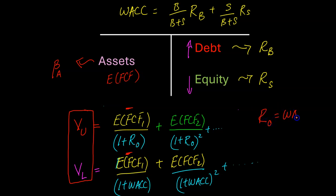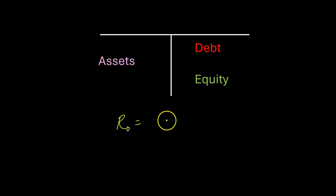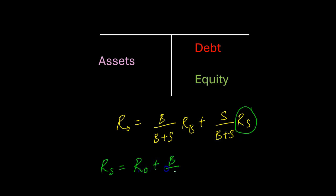R-naught equals weighted average cost of capital. And if you make use of the fact that WACC is just the weighted average of the cost of debt and the cost of equity, then you can say that R-naught equals B over B plus S into the cost of debt plus S over B plus S into the cost of equity. And if you rearrange this so that you make RS the subject, it can be shown that RS will come out to equal R-naught plus B over S into R-naught minus RB. And this essentially is Modigliani and Miller's proposition number two.